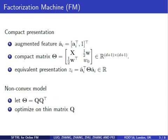We can present the interaction matrix, linear term, and the bias in one compact matrix theta. A simple method to solve FM is factorizing theta by a low-rank matrix Q directly, which leads to a non-convex optimization. The update of Q is efficient but lacks theoretical guarantee, and in practice this method is usually unstable.